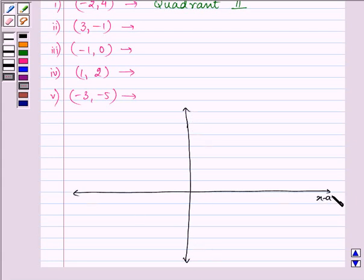This is the x-axis. This is the y-axis. This is the positive side of the x-axis and the negative side of the x-axis. Let us plot a few points on it.